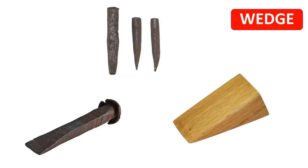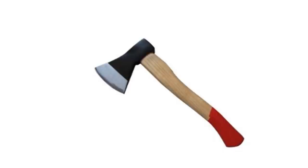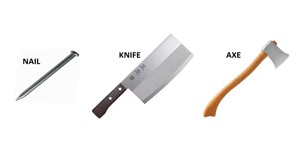A wedge is simply a triangular tool, often made of metal, wood, or stone. It is thick on one end and tapers to a thin or sharp edge on the other end. A wedge may be attached to a handle to make it easier to use. Good examples of wedges are nails, knives, and axes.